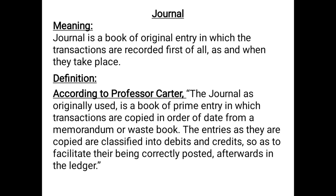If you remember the accounting cycle, there are a number of steps in the accounting process. First we prepare the journal, then the ledger, then the trial balance, then the trading account, followed by the profit and loss account, and ultimately the balance sheet. Journal is the book of original entry because recording of transactions takes place first, and journal also helps in the preparation of further steps. Without journal, ledger cannot be prepared; without ledger, trial balance cannot be prepared — all steps are interrelated.